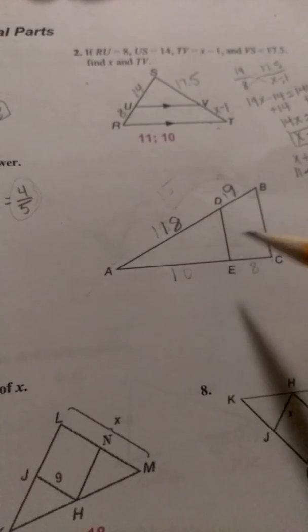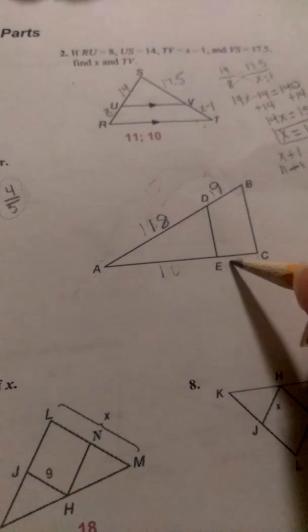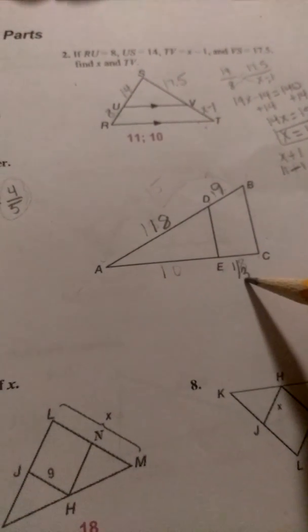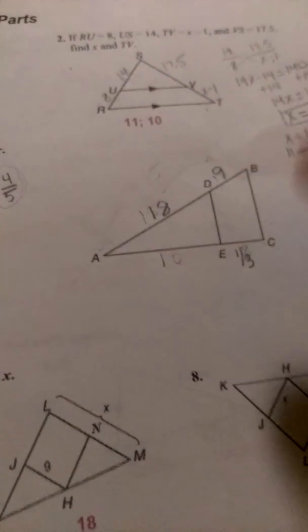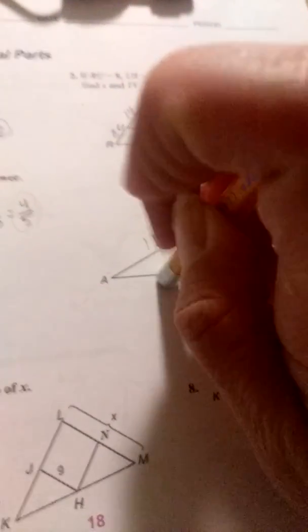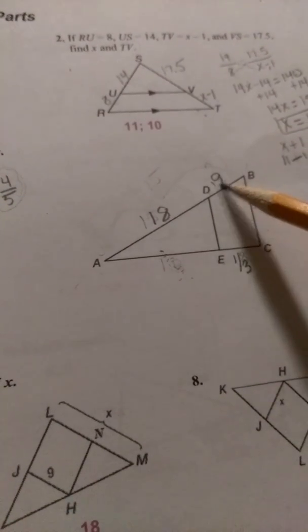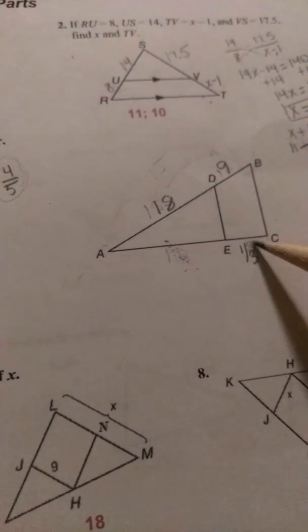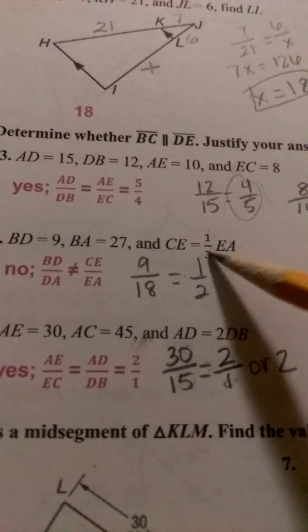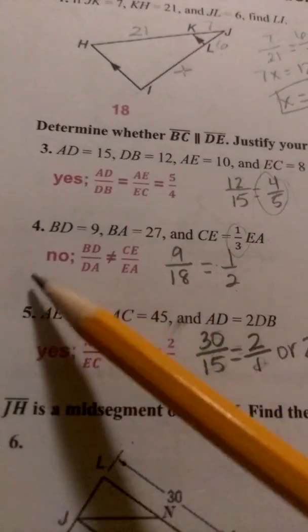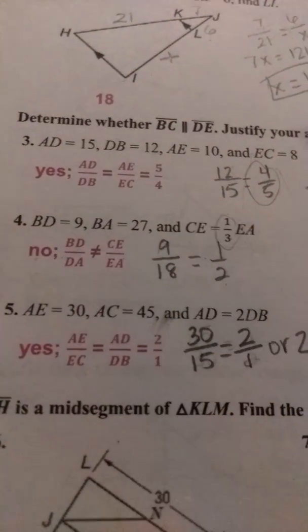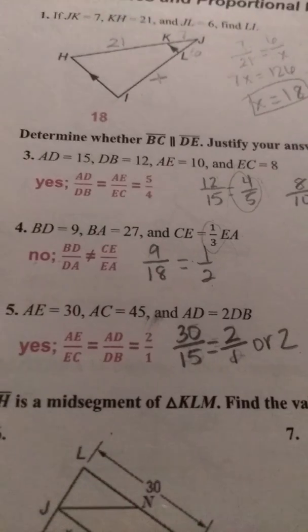And then CE is going to be 1 third of EA. So in order to compare this, we're basically just going to take the ratio of 9 over 18 and see if it's equal to this 1 third. So we do 9 over 18, and that gives us 1 half, and it's not the same as 1 third. Therefore, those two lines would not be parallel in this situation.